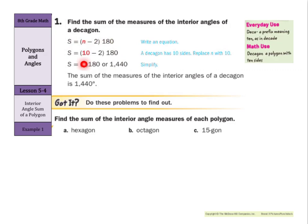Now find the sum of the interior angles of each polygon. Let's try this ourselves. Well we're going to always start by writing our formula. So S = (n - 2) × 180. Now a hexagon has six sides.